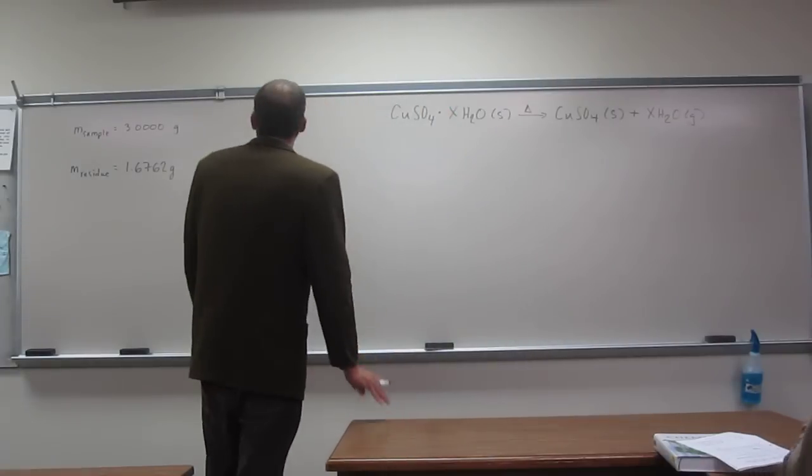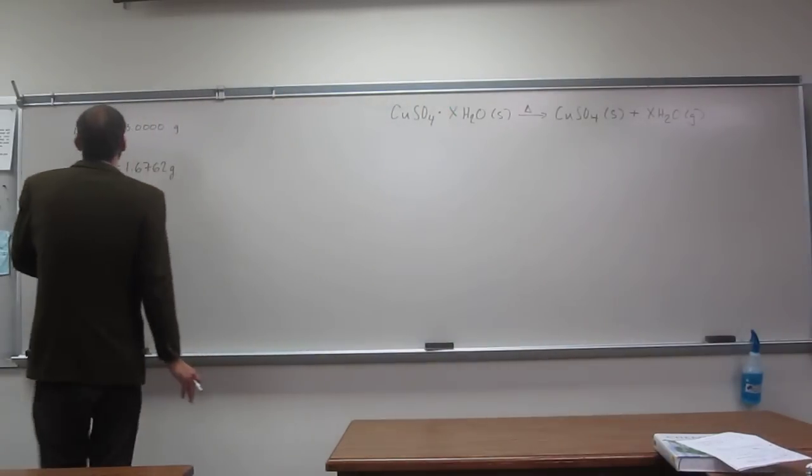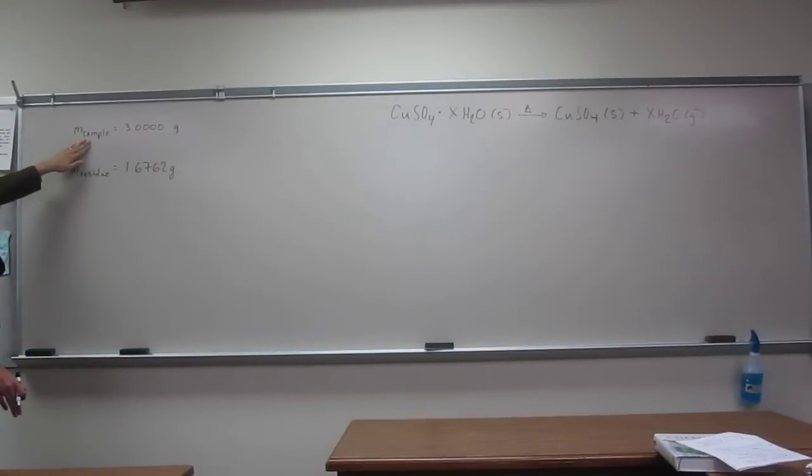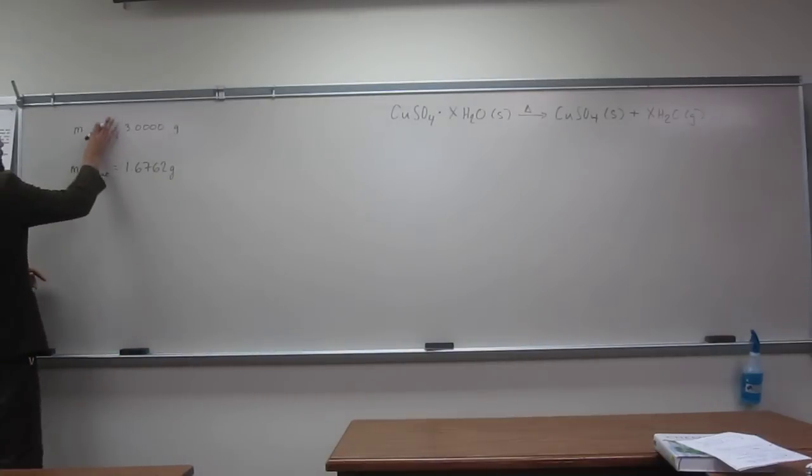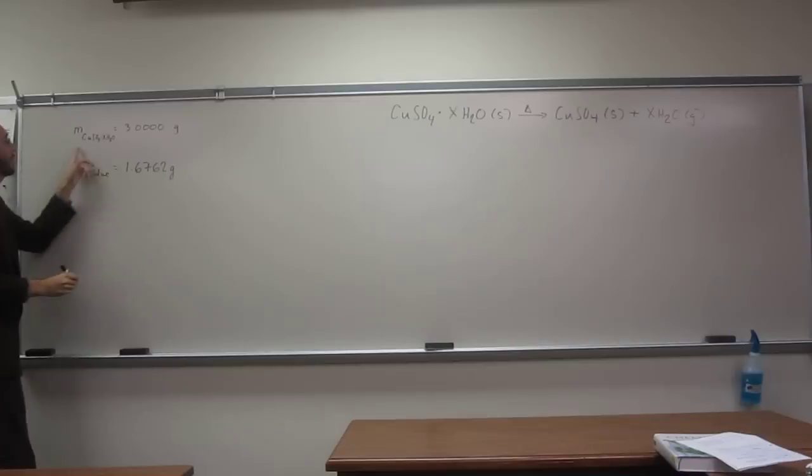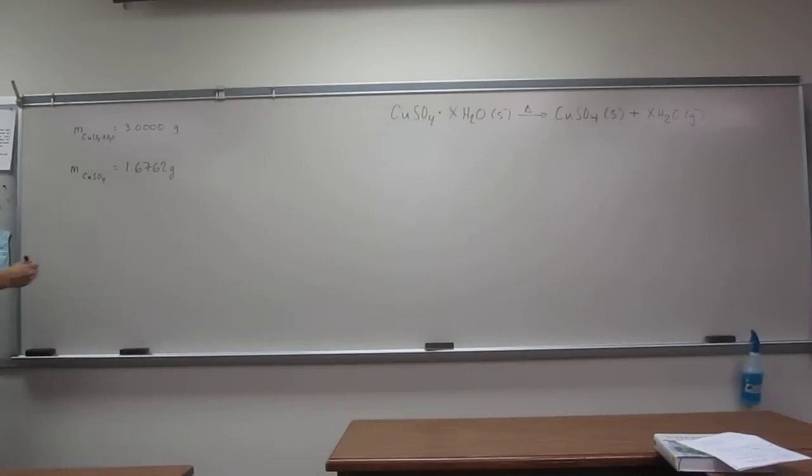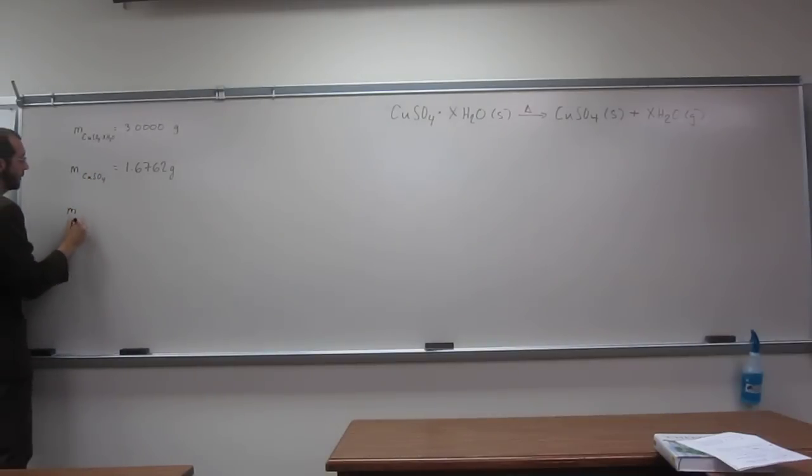Okay, so anyways, in other words, it's telling us once we—this mass of this sample is this, actually, we can write CUSO4·xH2O, okay, that's the sample. The residue is actually CUSO4 itself, okay? So the mass difference would be the mass of water, actually.